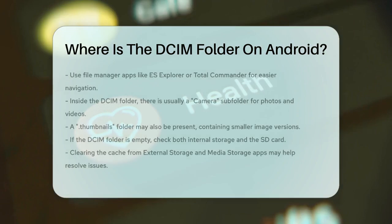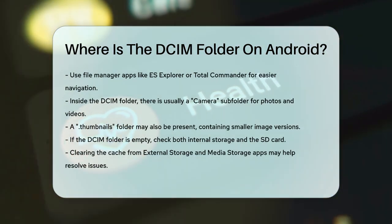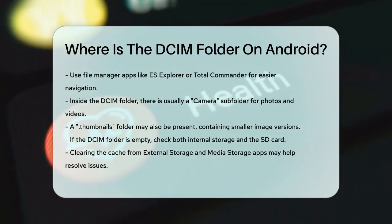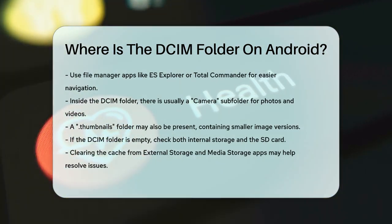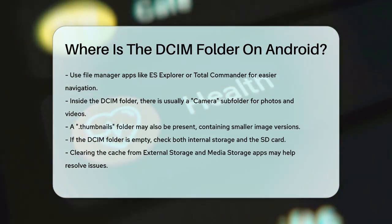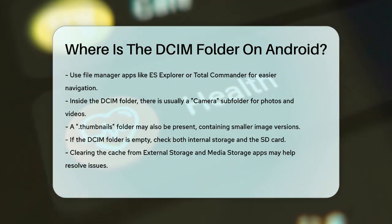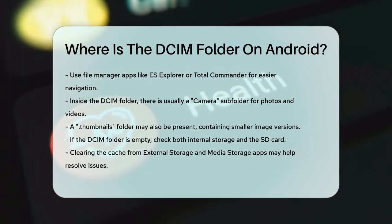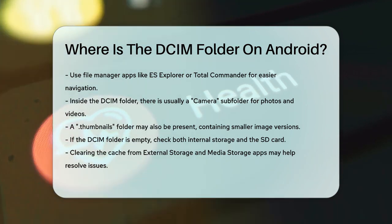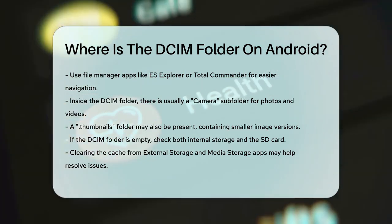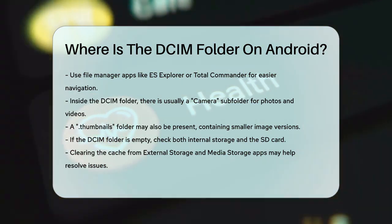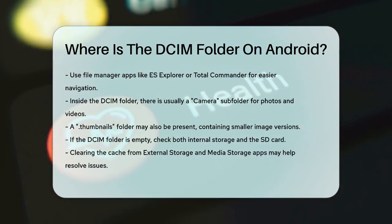If you're having trouble finding your photos, or if the DCIM folder appears empty, make sure to check both the internal storage and the SD card. Sometimes photos might be stored in one location but not the other. You can also try clearing the cache from the external storage and media storage apps to resolve any issues.